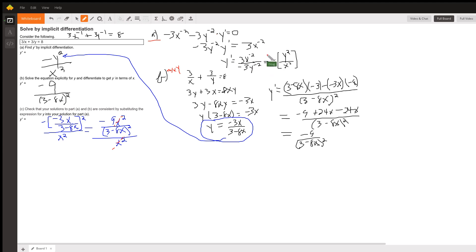Okay, so there's the answer to part a. Now for part b we're going to first solve this equation explicitly for y by multiplying every term by xy, which is the least common denominator of the two fractions.